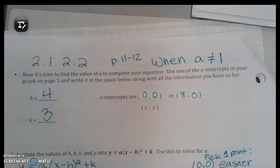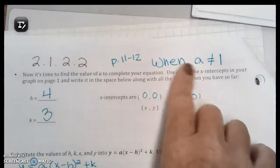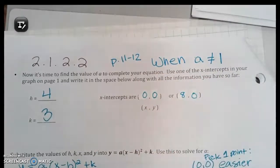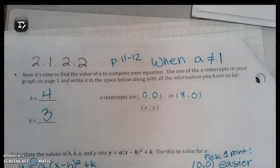Actually named section 2.1.2a, my own title which is when a does not equal one. We were looking at the rabbit problem yesterday. We wanted the rabbit to jump over the wall and all of you guys drew these great graphs.